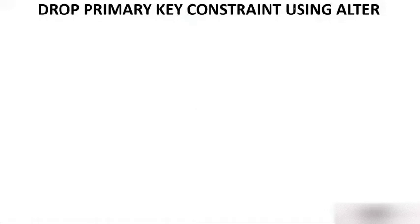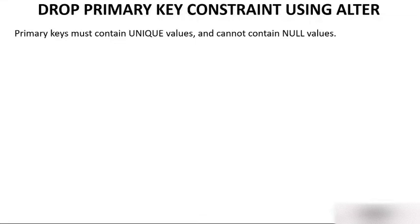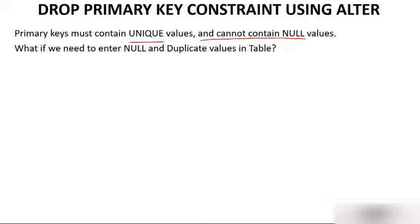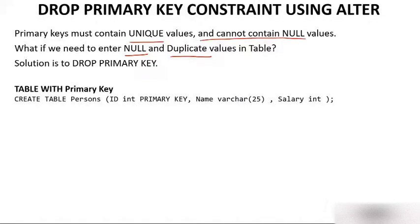First we will understand how to drop a primary key constraint using ALTER. Primary key must contain unique values — this we know very well. In a previous video we discussed that primary key must be unique and cannot be null. So what if we need to enter null values and duplicate values? The solution is to drop the primary key.